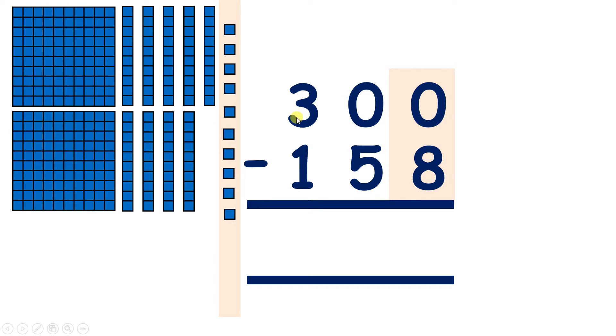So now rather than crossing out one digit at a time, we can cross out 30 and write 1 less than 30. So write 29 above it, because we have 2 hundreds and 9 tens. And now we have 10 units.